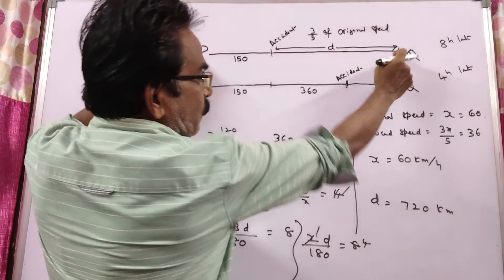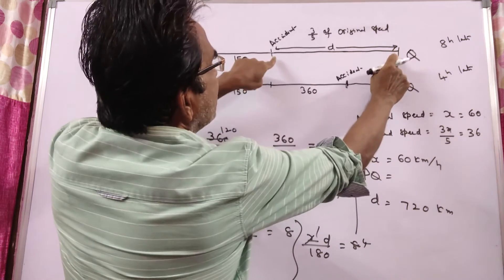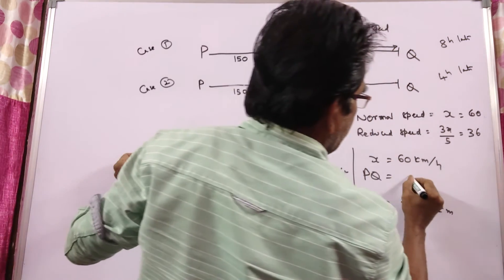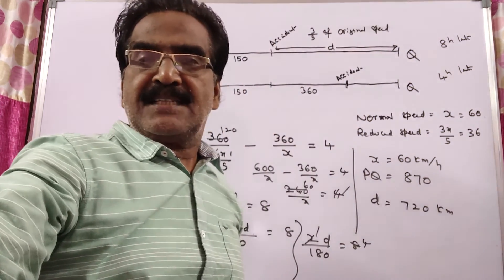Now, we want the distance between P and Q. PQ is equal to, this is 720, this is 720 plus 150, 870 kilometers is your answer. Friends, thank you.